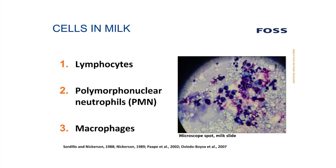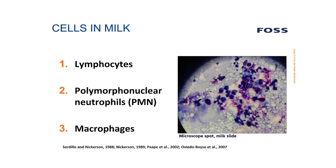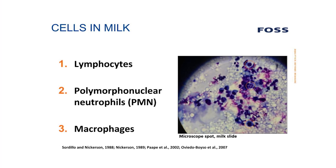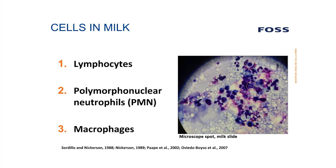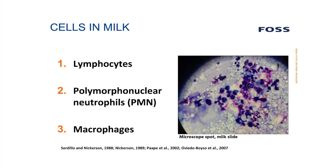When we talk about cells in milk, we refer to different types of cells — those being lymphocytes, polymorphonuclear neutrophils, and macrophages.